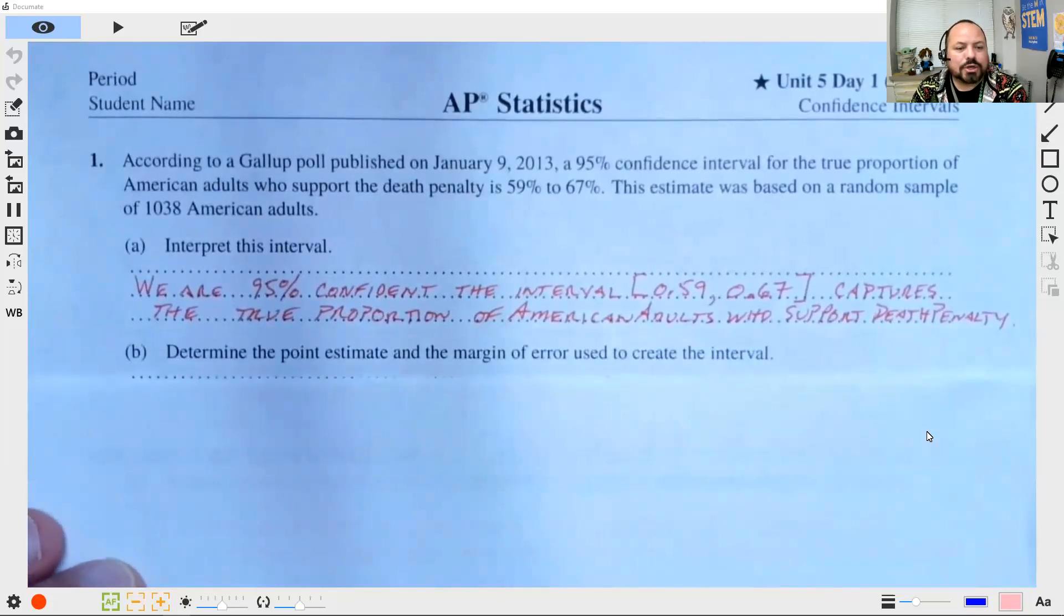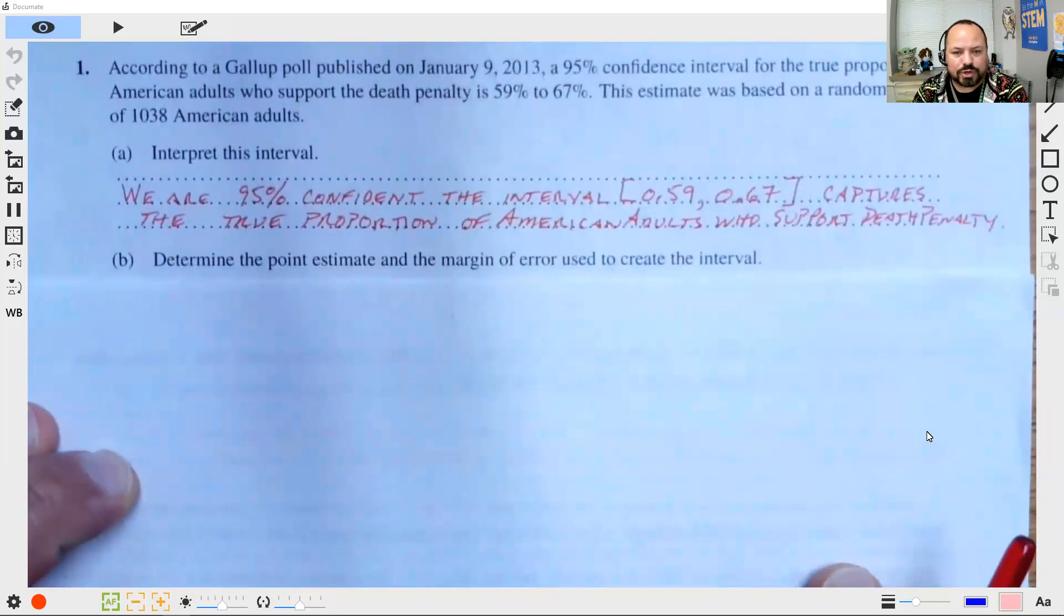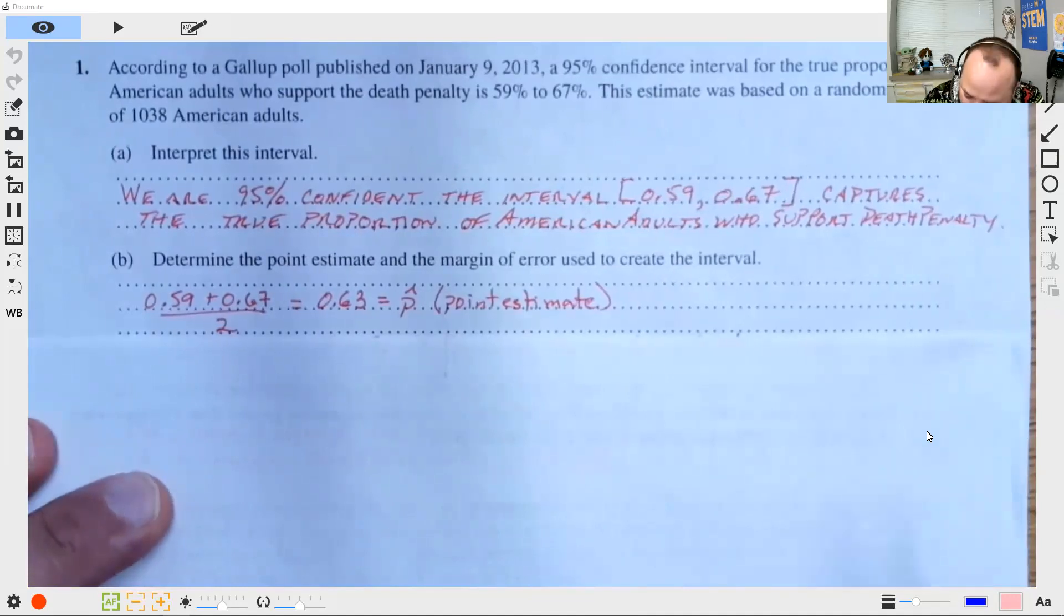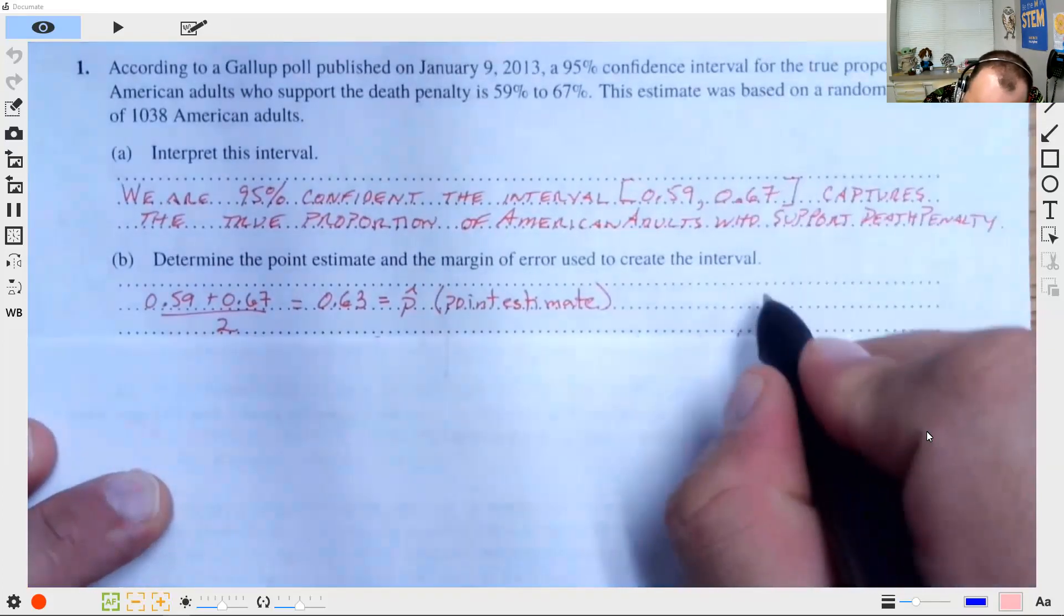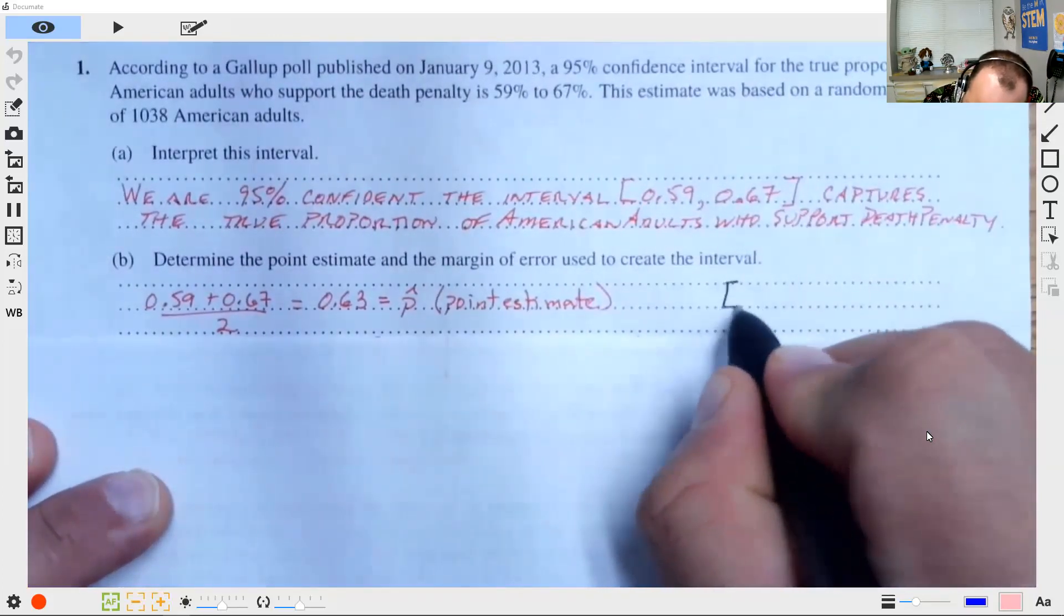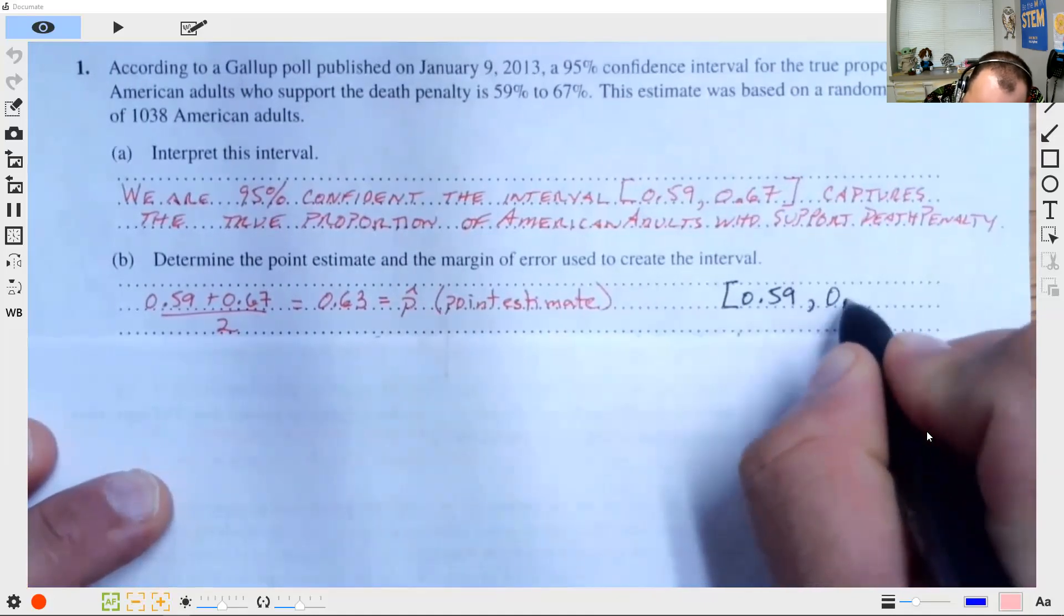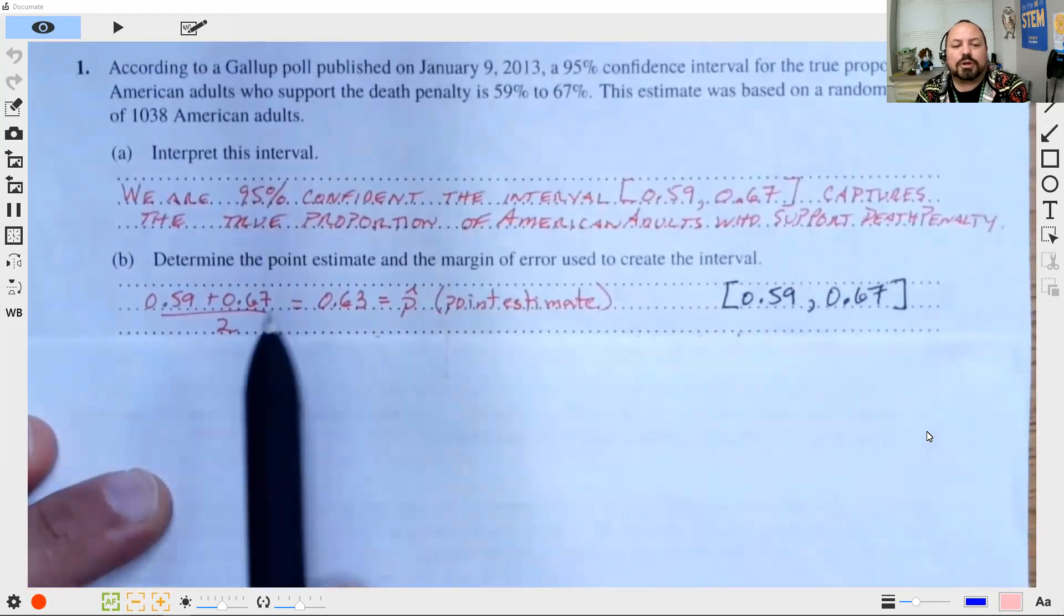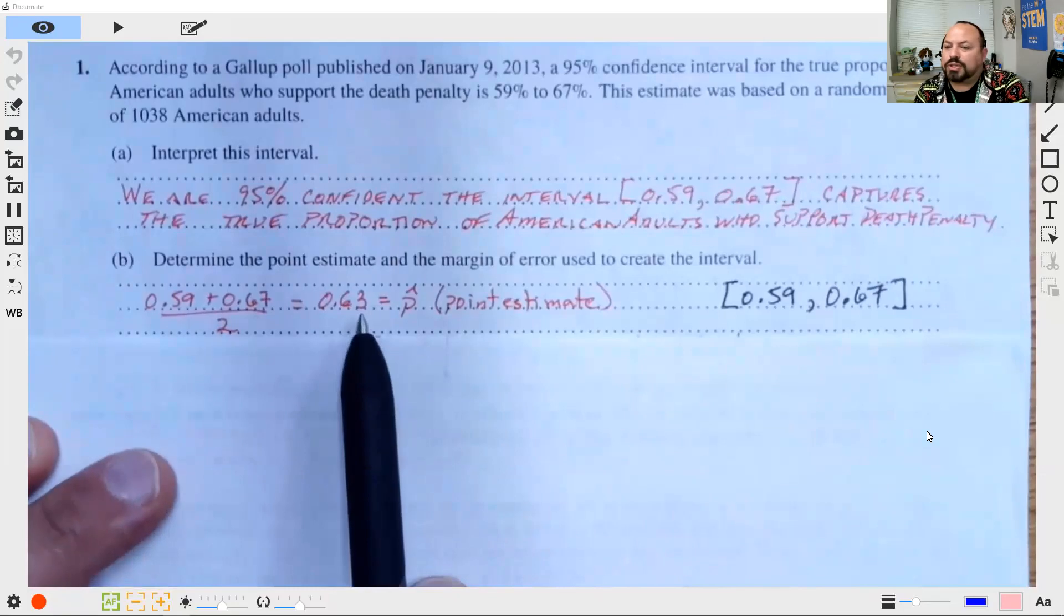Okay. Next, we ask, determine the point estimate and the margin of error used to create the interval. Well, our point estimate is nothing more than the center of the interval. If my interval goes from 0.59 to 0.67, I just need to find the center of that interval, which is simply the average of the two numbers. And so that's going to be 0.63.